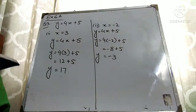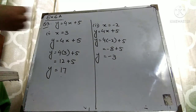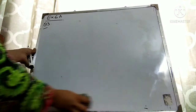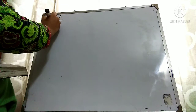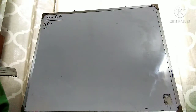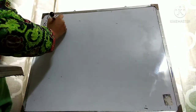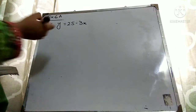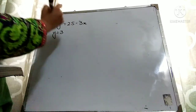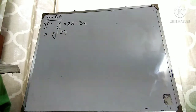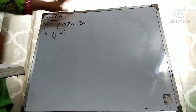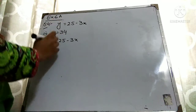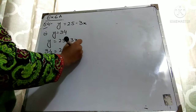Now question number 4. The equation of the function is y equals 25 minus 3x. Find the value of x when y is equal to 34. I am going to substitute the value of y into the equation. In place of y, write 34, and keep 25 minus 3x as it is.